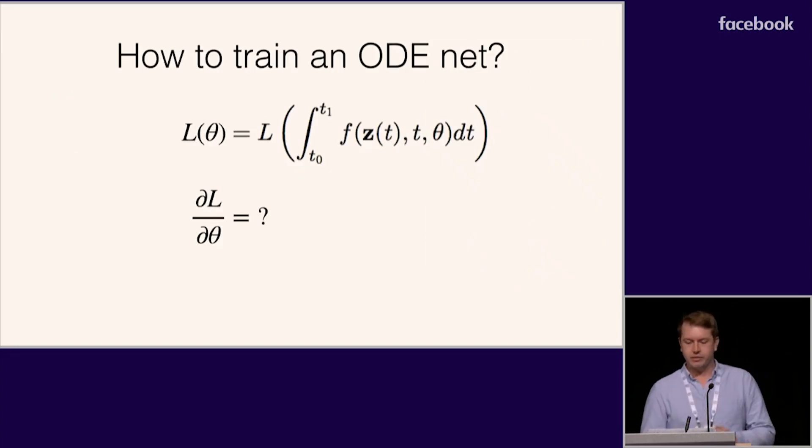So how do we train these networks? We somehow have to get the gradient of the objective through the ODE solution. You might think that we're going to simply back-propagate through the operations of the ODE solver, but this is a bad idea for two reasons.